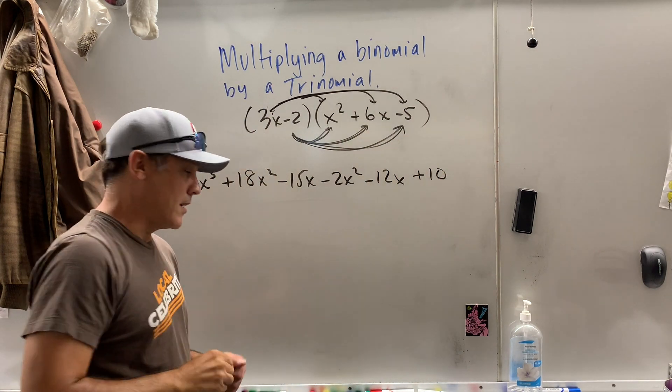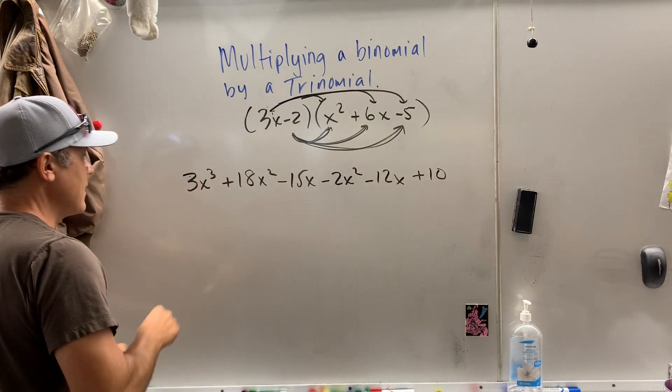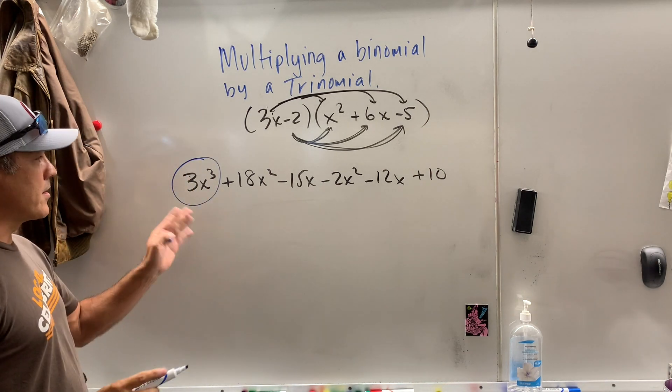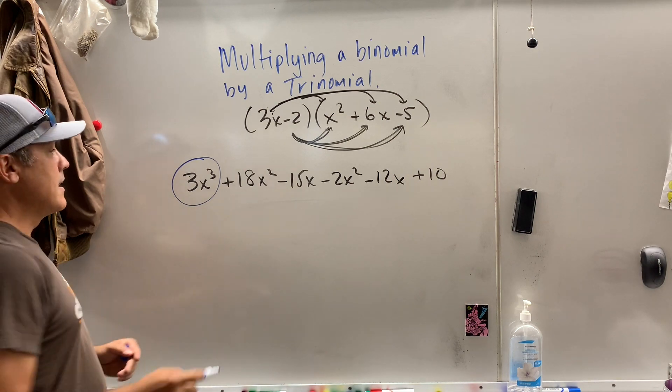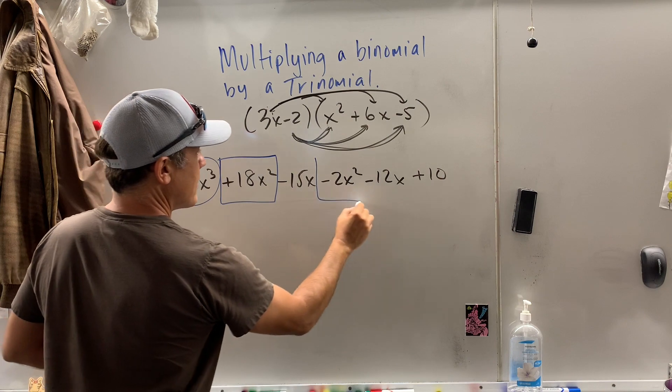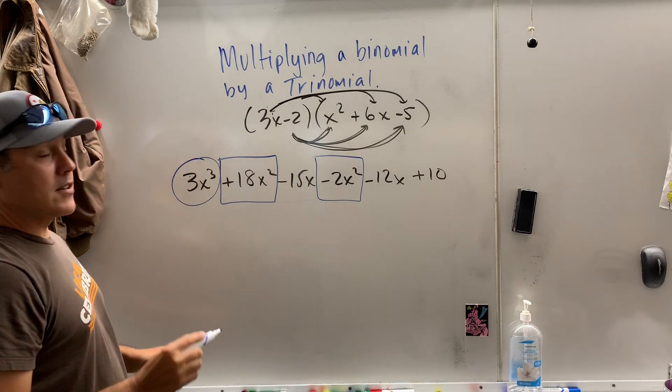Now we got to combine the like terms. So what I like to do is put a circle around all my cube terms. Oh, that's the only one. Now I'm going to put maybe a rectangle around the squared terms. So there's one there. That's it.